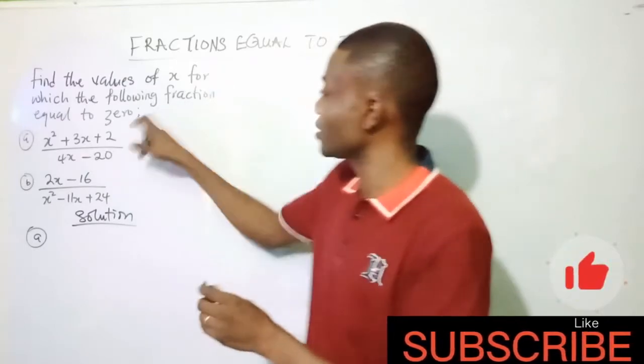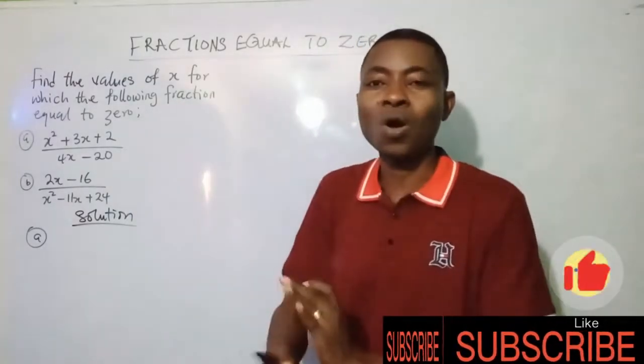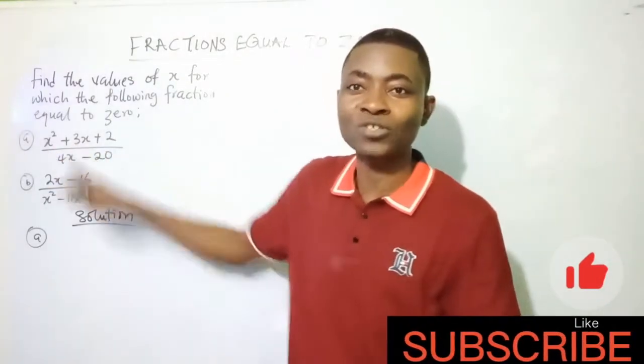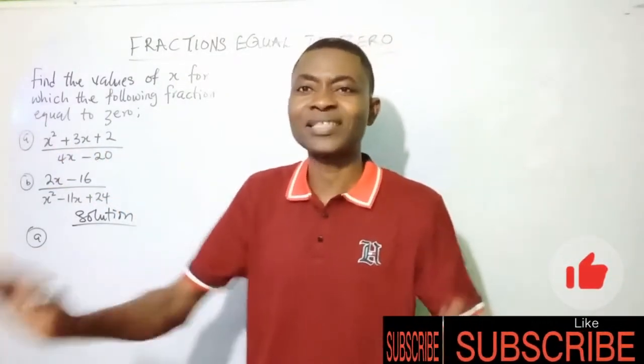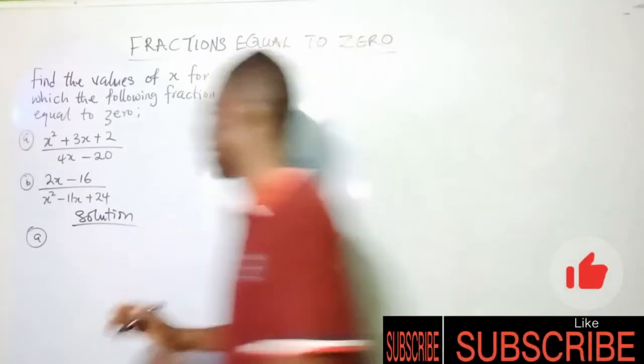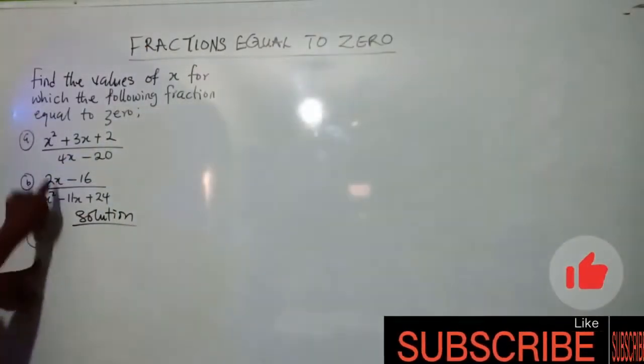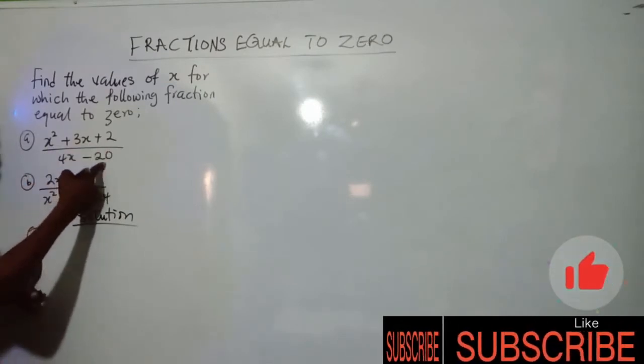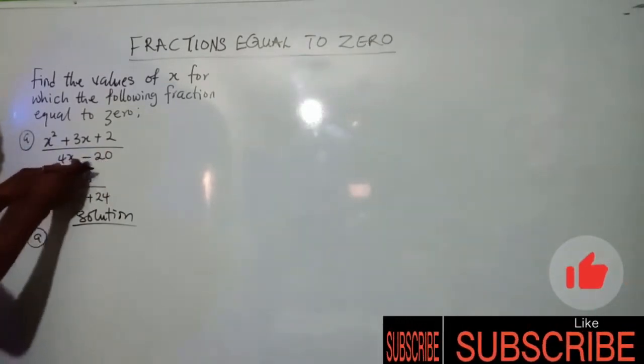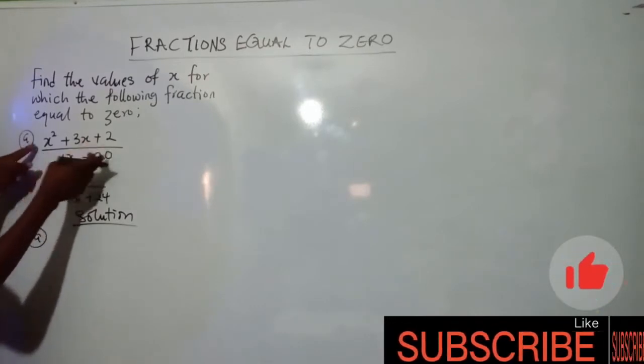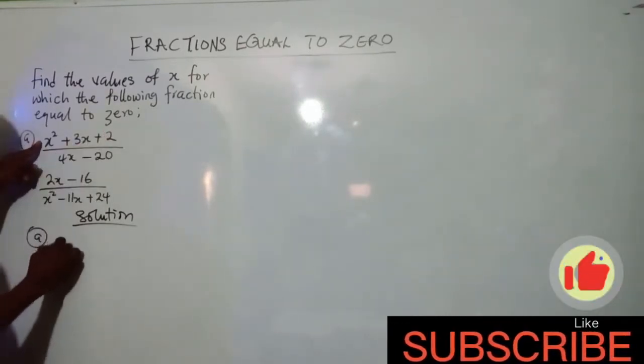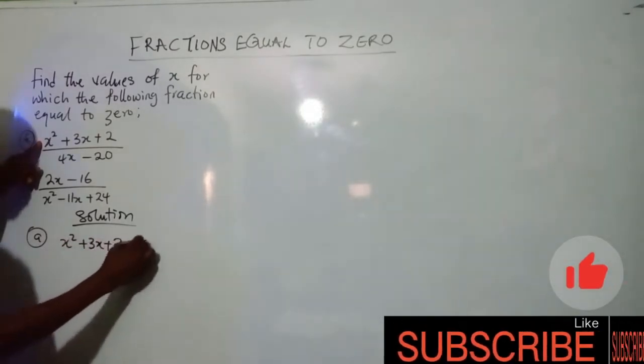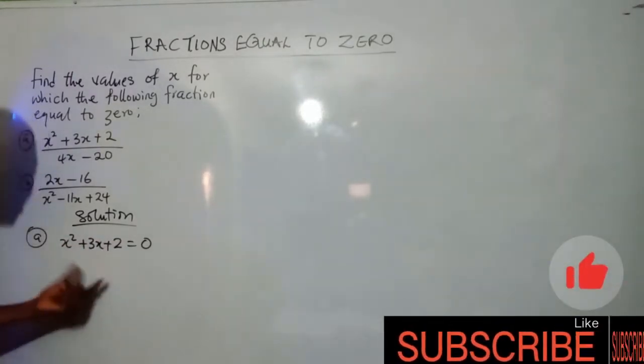When you're asked to find the value of x for which the following fraction equals zero, all we're interested in is the numerator. Whatever you have in the numerator, equate it to zero, and the answer will come out from there. Let's see how we do that. So our attention is on x²+3x+2=0.